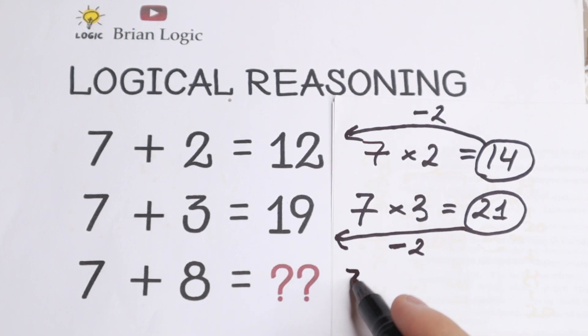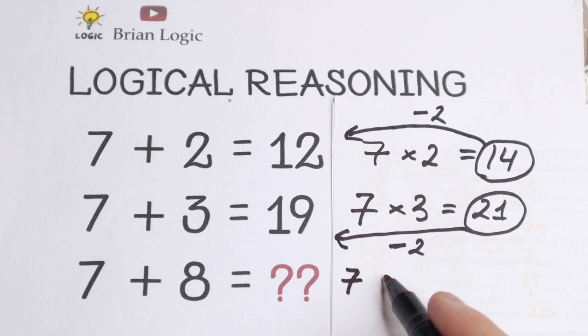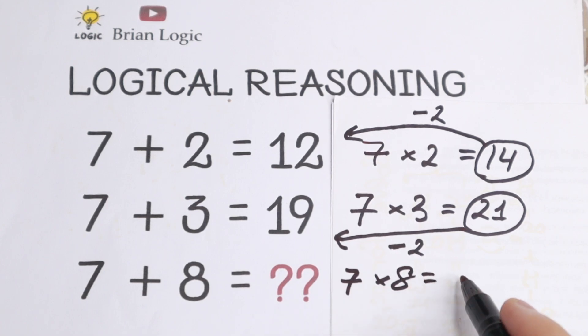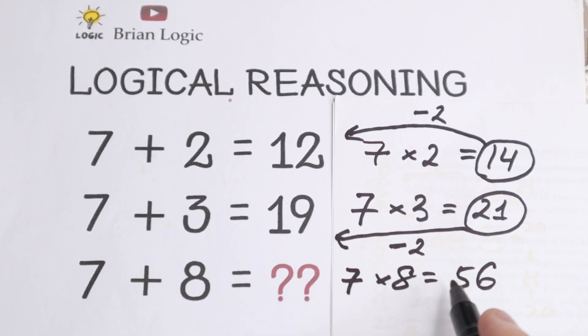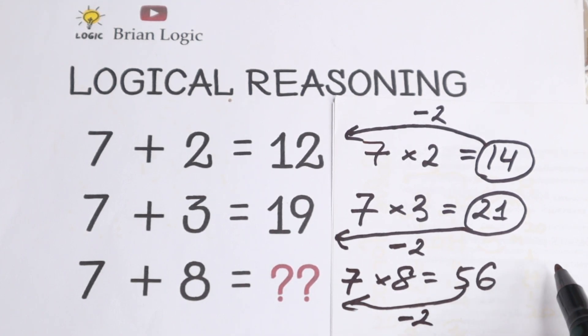Let's do this. We will have 7 times 8, we will have 56. And the last step we need to subtract 2. If you subtract 2 right here, we will have 54.